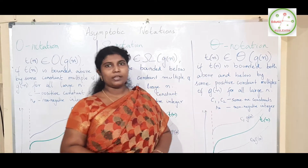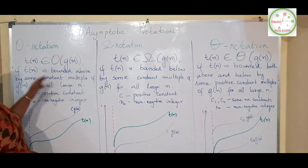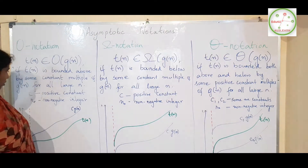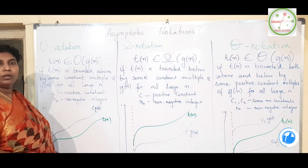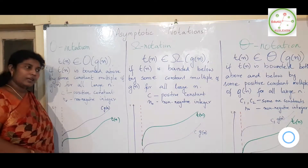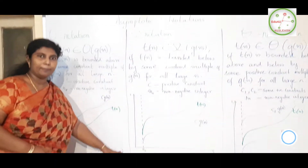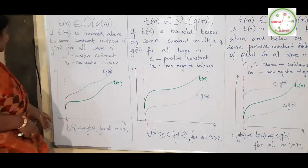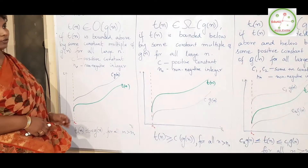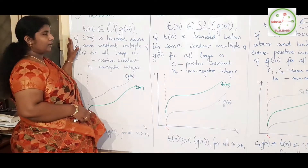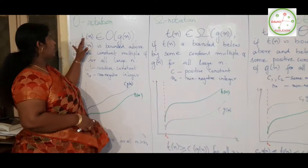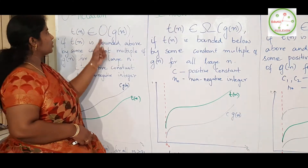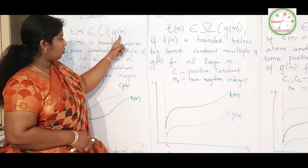For Big O notation: you have T(n), which is the time taken for running the program, and it is very much dependent on the size of input. The x-axis represents input size and the y-axis represents time taken. Now the definition: p(n) belongs to the category called Big O of g(n).